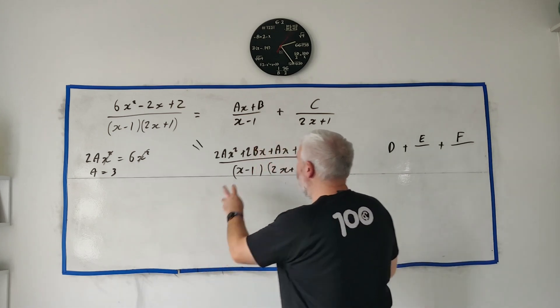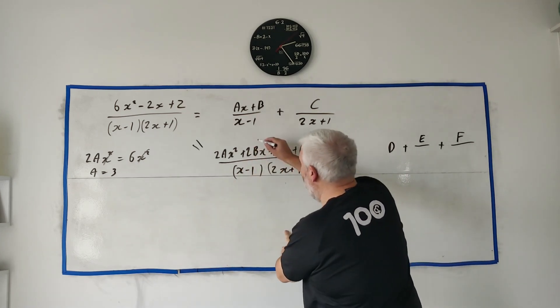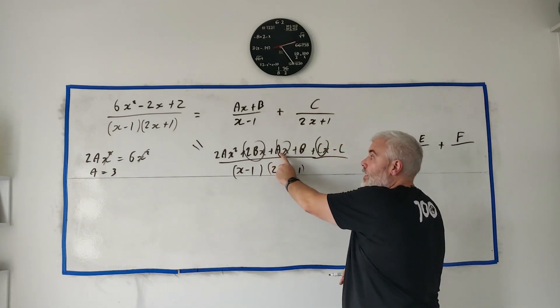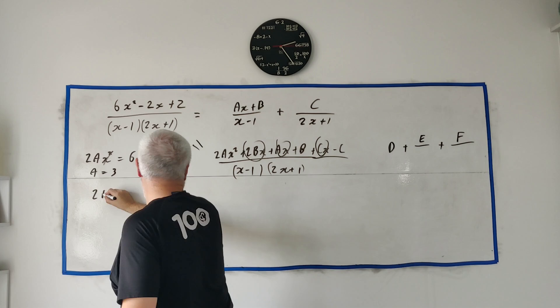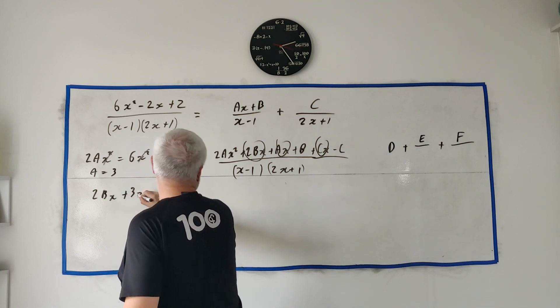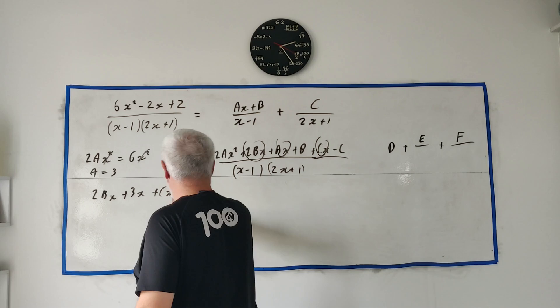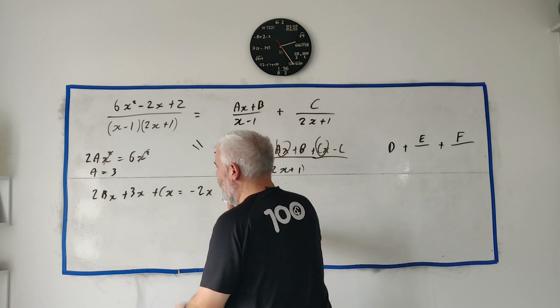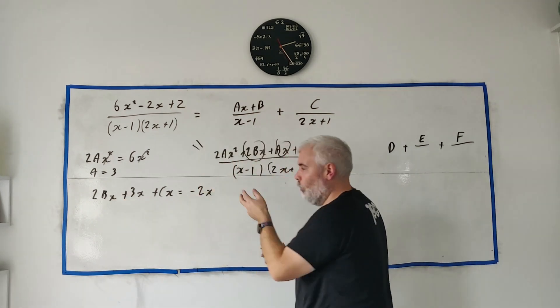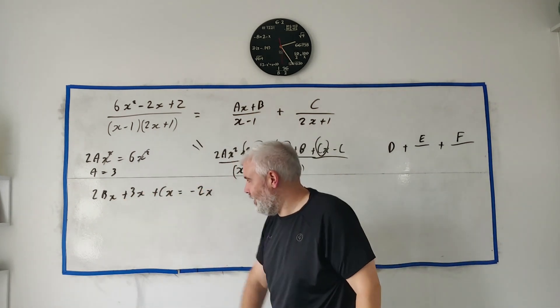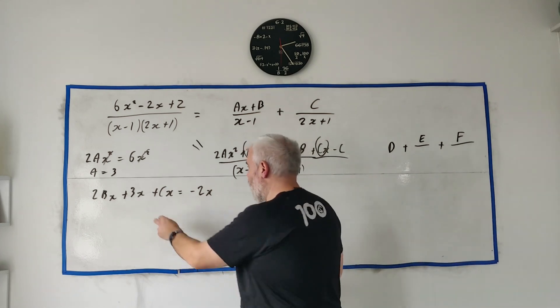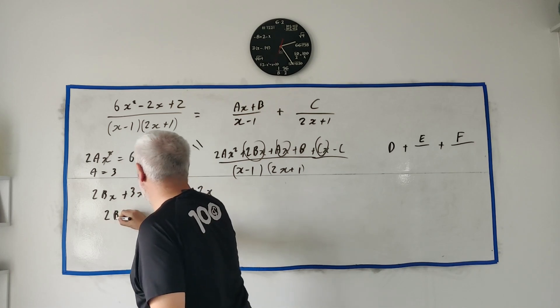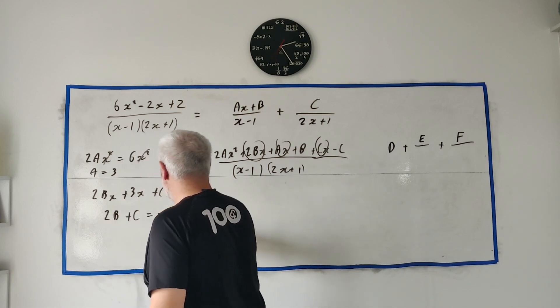Okay let's equate all the x's now. Here's an x, here's an x, and here's an x, except remember a is 3 now so we get 2bx plus 3x plus cx is equal to minus 2x. So I said I wasn't going to write the x's but we'll just cancel all these x's across. While we're at it we'll bring this 3x over, get minus 5x. So we'll get 2b plus c is equal to minus 5.